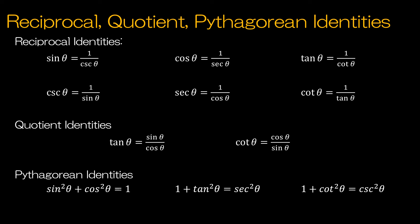The same goes for cosine and secant, and tangent and cotangent. Then we have the quotient identities dealing with tangent and cotangent, so tangent is sine of theta divided by cosine of theta, whereas cotangent is simply the reciprocal of that. Then we have the Pythagorean identities: sine squared theta plus cosine squared theta equals one, one plus tangent squared theta equals secant squared theta, and one plus cotangent squared theta equals cosecant squared theta.